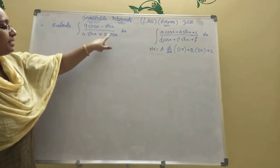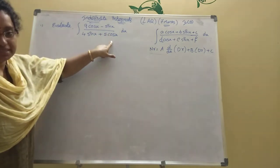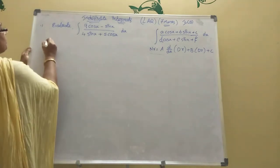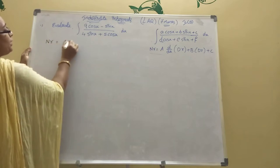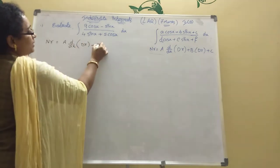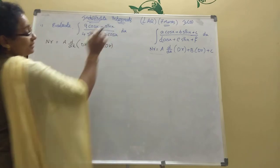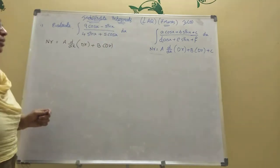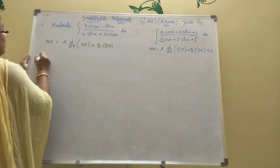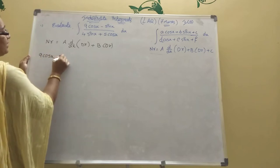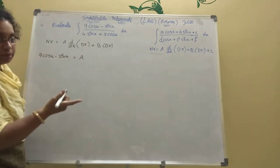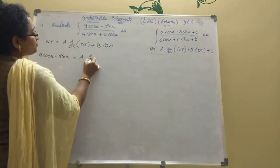The model is: A cos x plus B sin x divided by D cos x plus E sin x. You convert it using this formula: numerator equal to A into d/dx of denominator, plus B into denominator. Here there is no constant term, that is why I am not writing C.